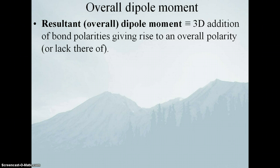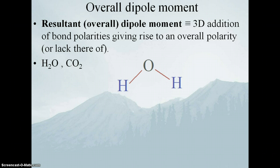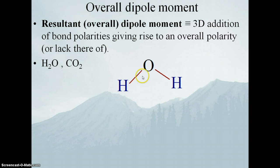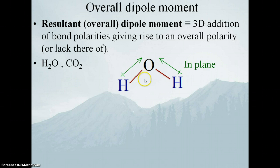Vector addition of bond dipoles can be explained using three simple examples. The first two are water and carbon dioxide. Here's our water molecule — I've left off the lone pairs but there are two lone pairs, and the molecular geometry of water is bent, so the bond angle is about 104.5 degrees. We have bond dipoles because we have a covalent bond between oxygen and hydrogen, which are different elements. There's a bond dipole here and a bond dipole here, pointing toward the more electronegative element. The hydrogen, the oxygen, and the hydrogen are all in the same plane — the plane of the screen.